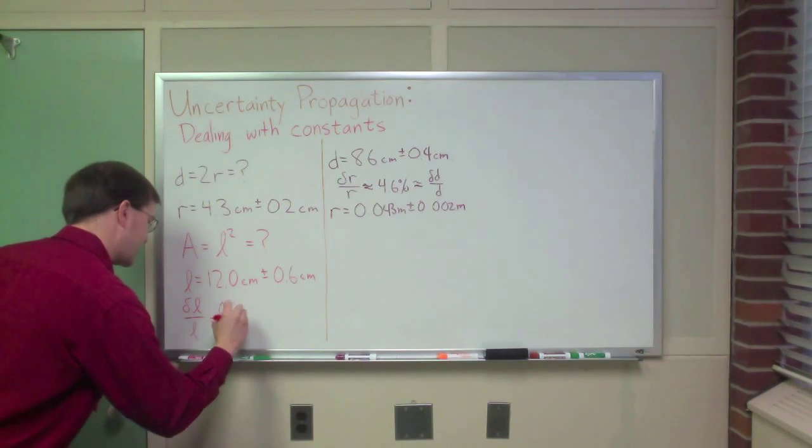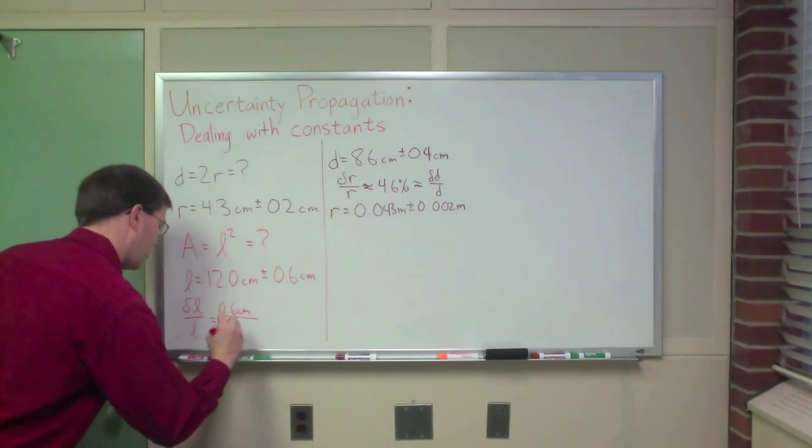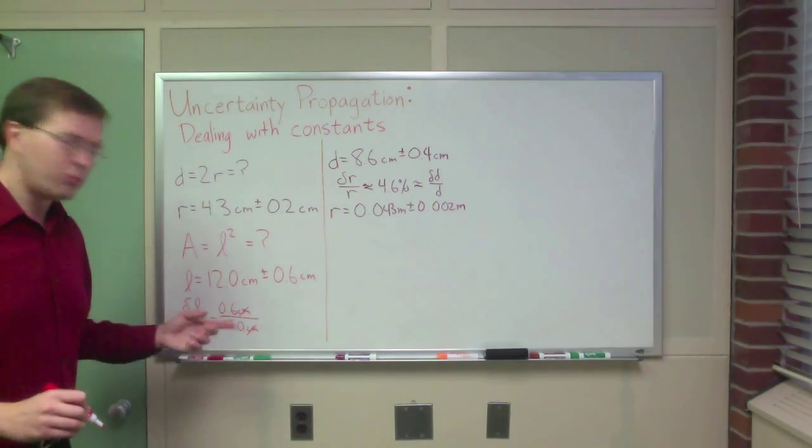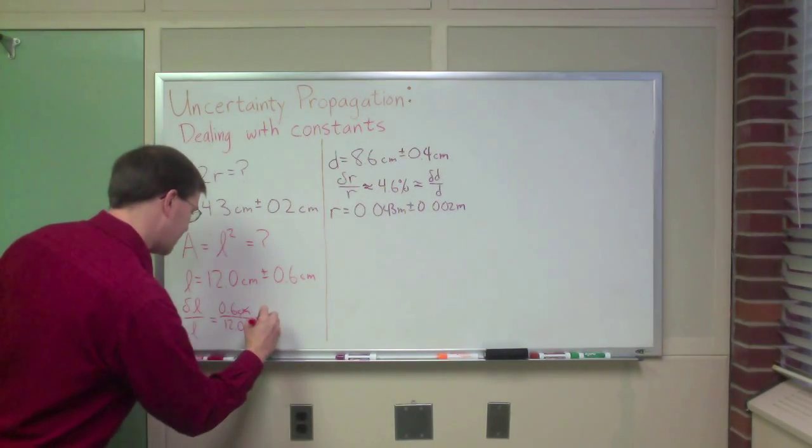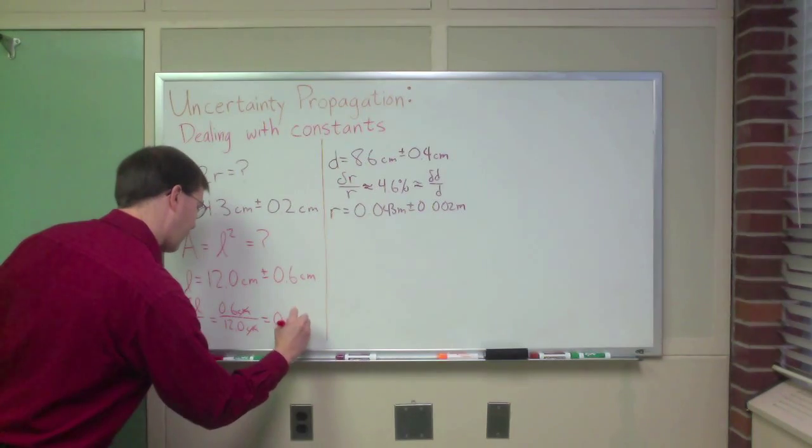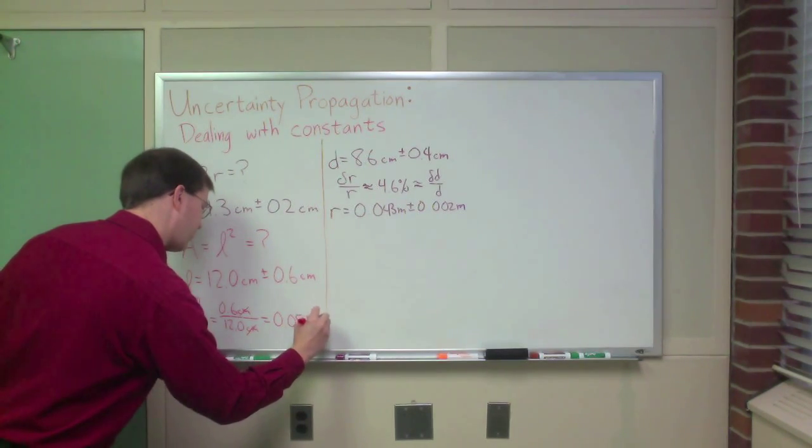So I need to start by figuring out what the relative uncertainty delta L over L is. That's 0.6 centimeters over 12.0 centimeters. As usual, the units cancel out. 0.6 over 12 is 0.05, or in other words, 5 percent.